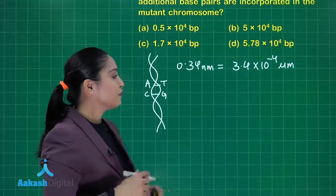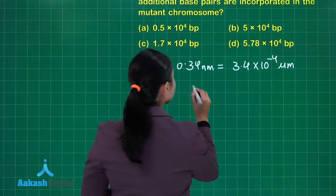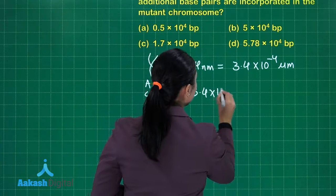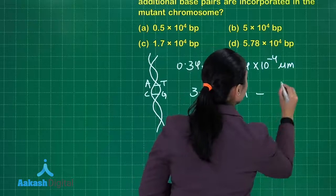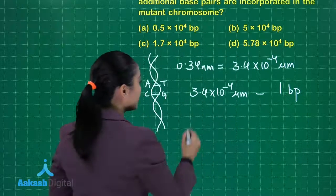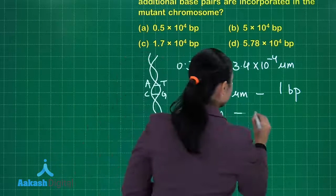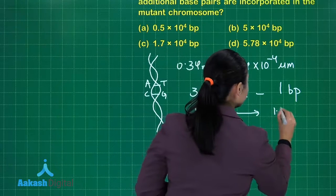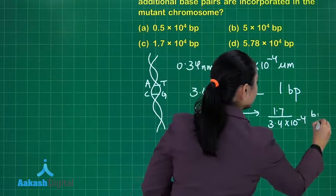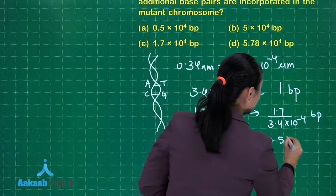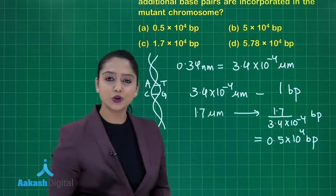We are given the increase in length and we have to find the number of base pairs incorporated. So: 3.4 × 10⁻⁴ micrometers is the increase in length for one base pair. The increase in length given is 1.7 micrometers, so the number of base pairs = 1.7 ÷ (3.4 × 10⁻⁴), which equals 0.5 × 10⁴ base pairs.